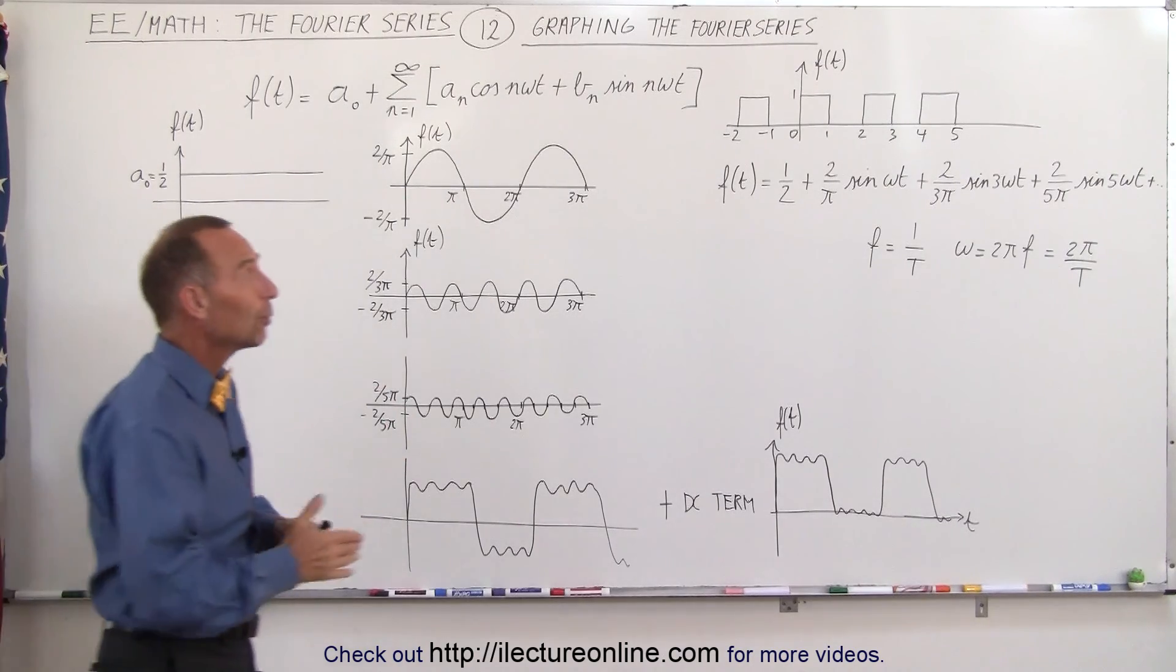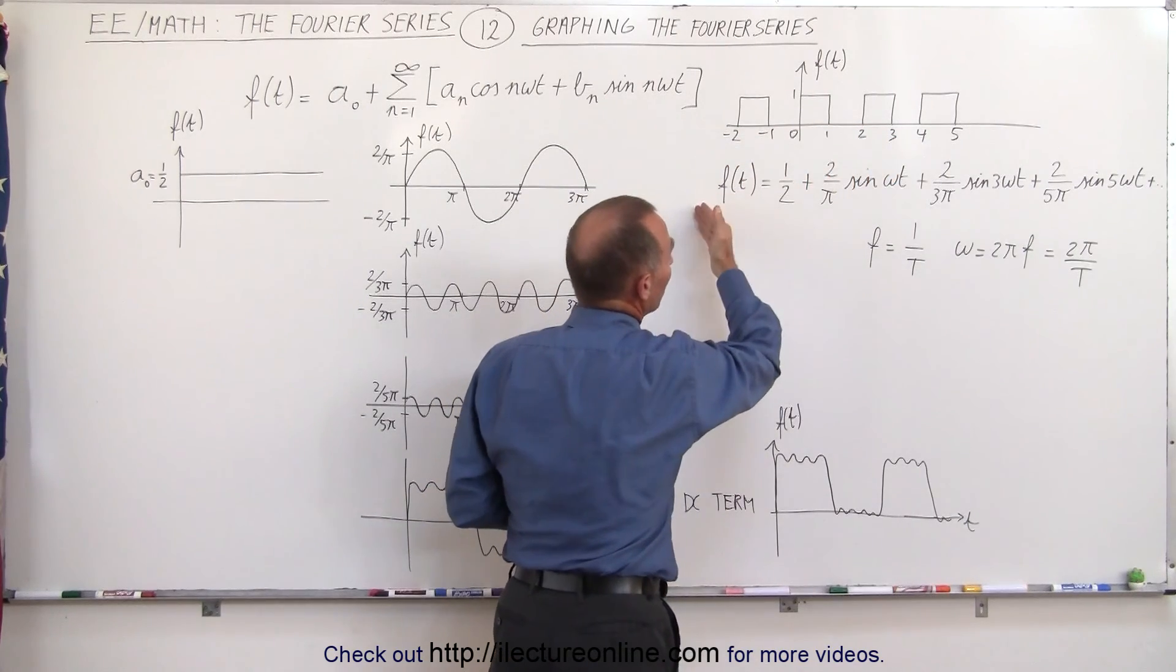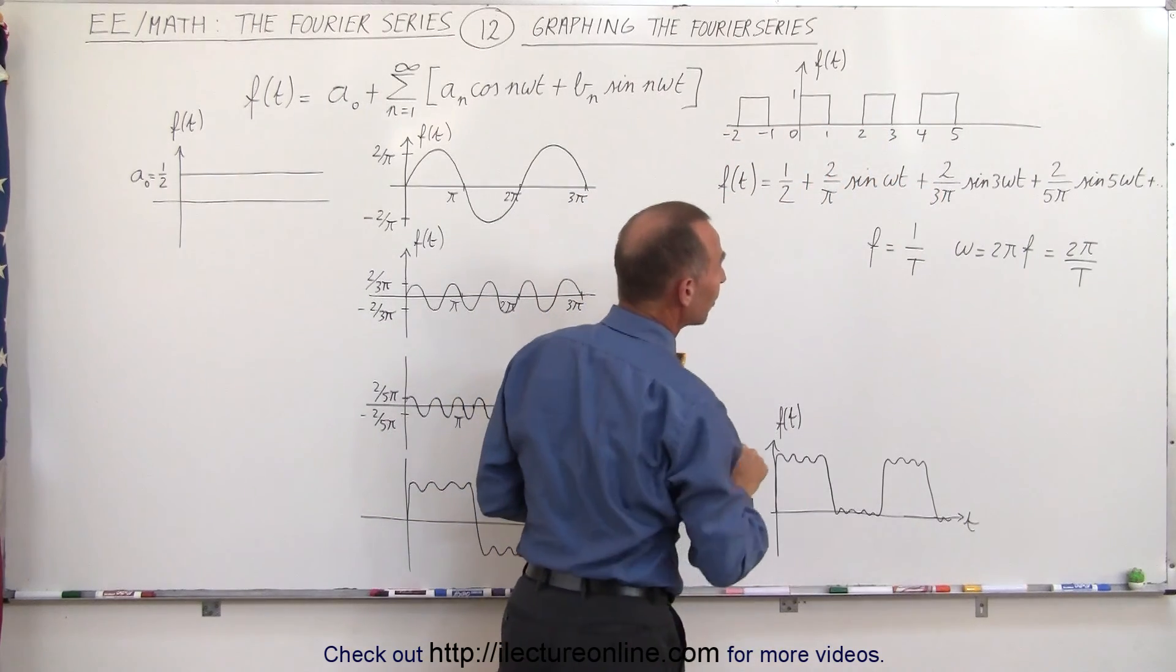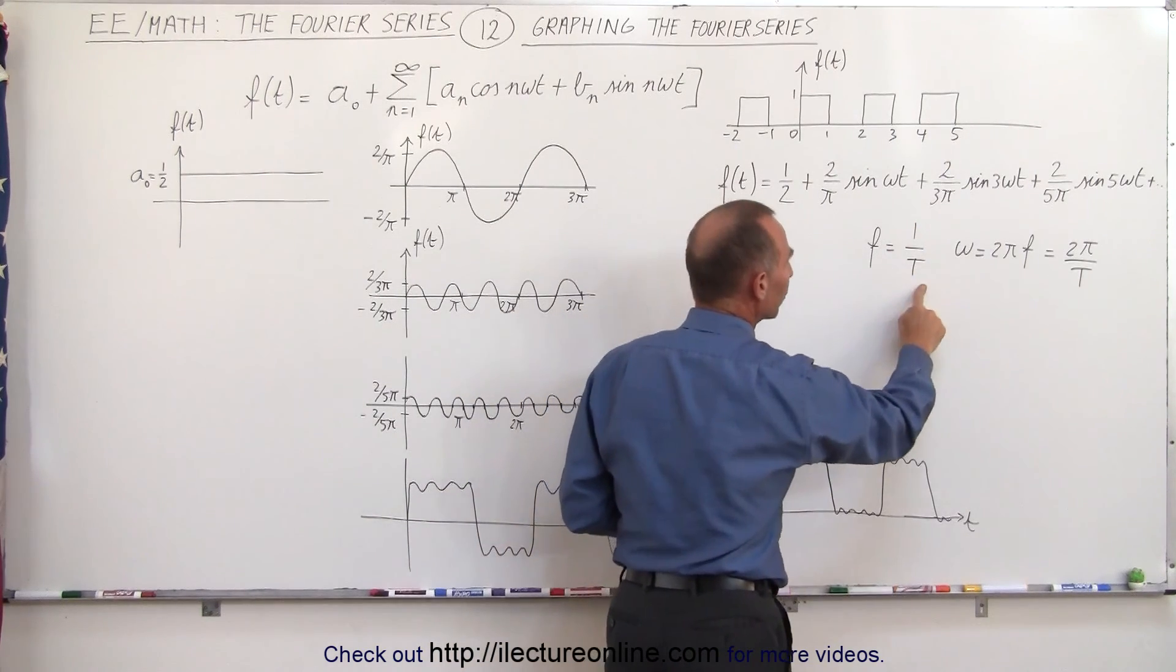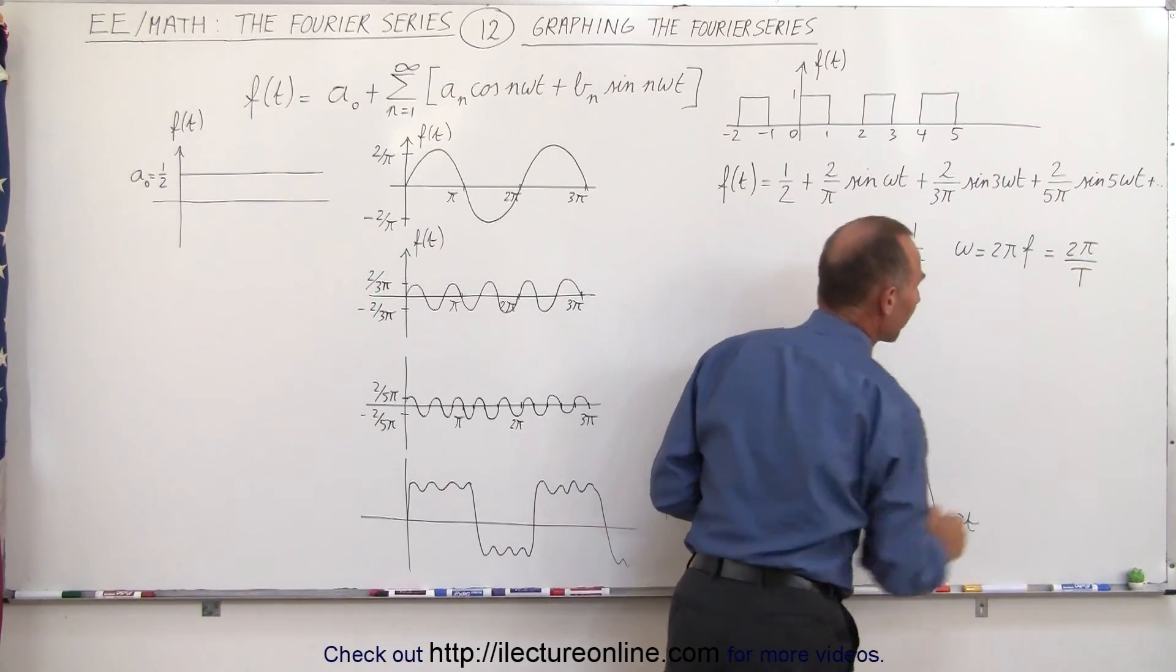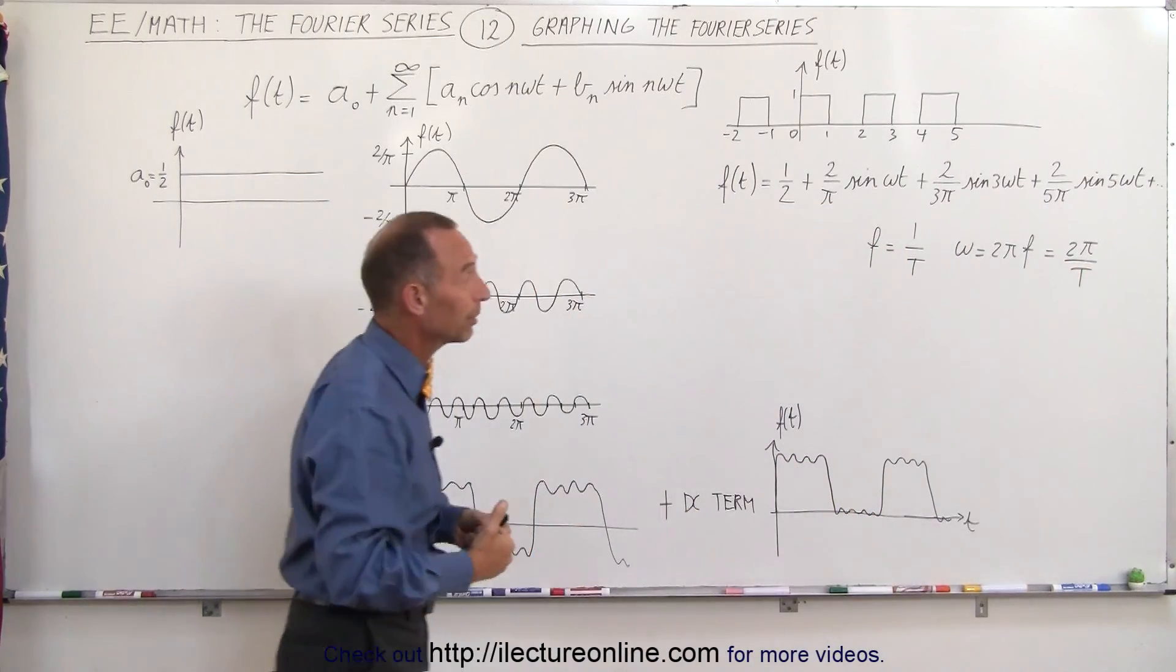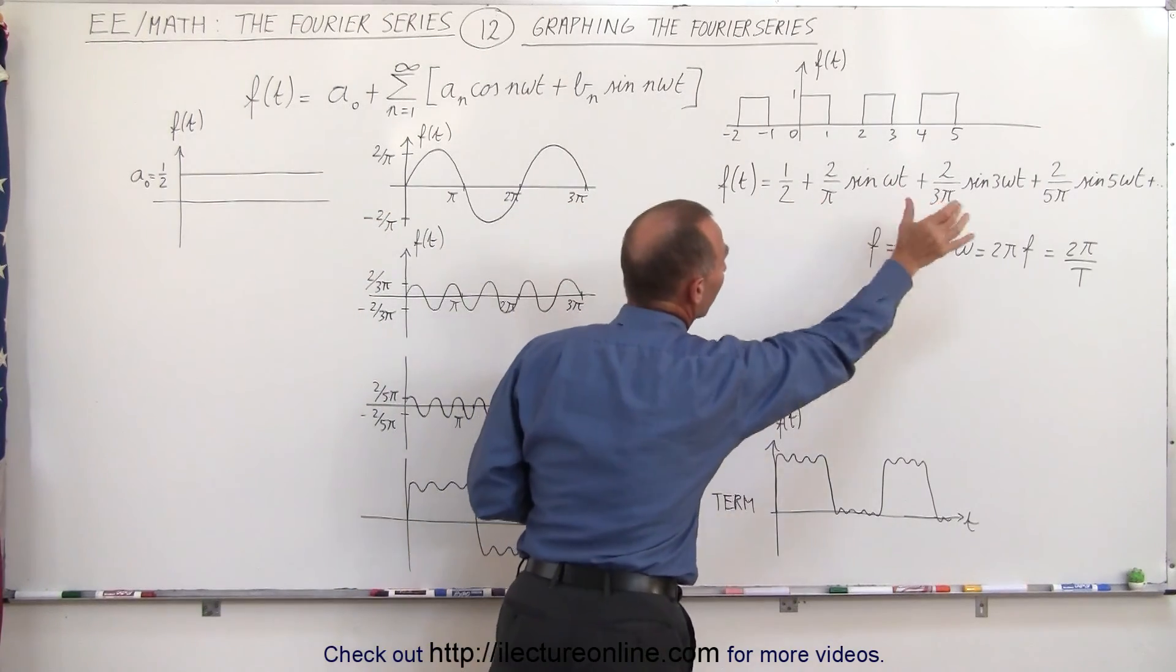What that means is that we started with an original periodic function like this for which we found the solution in a previous video and realizing that the frequency is 1 over the period or that the angular frequency is equal to 2π f or 2π over the period, 2π radians over the period, we can now graph each individual portion of the solution.